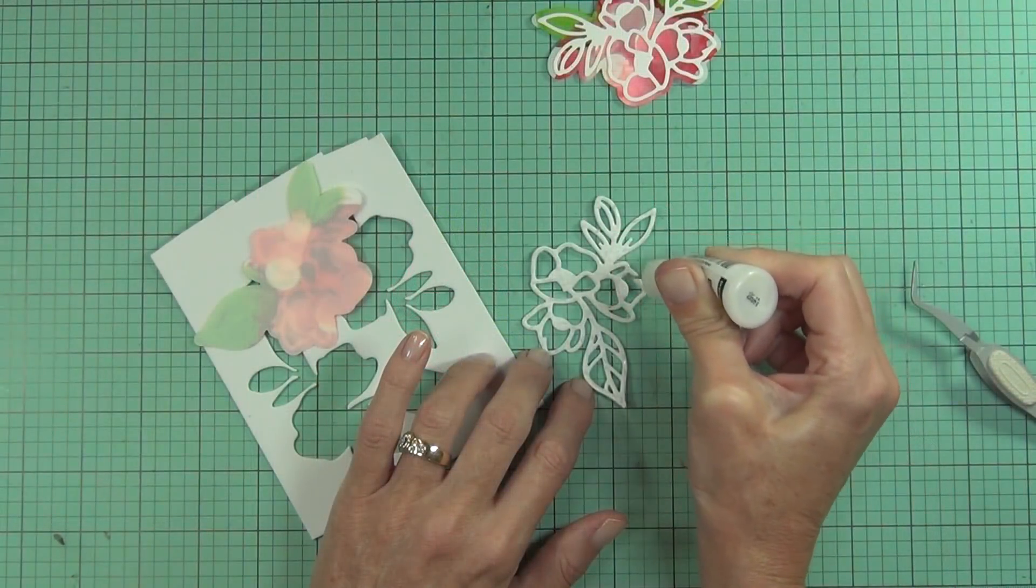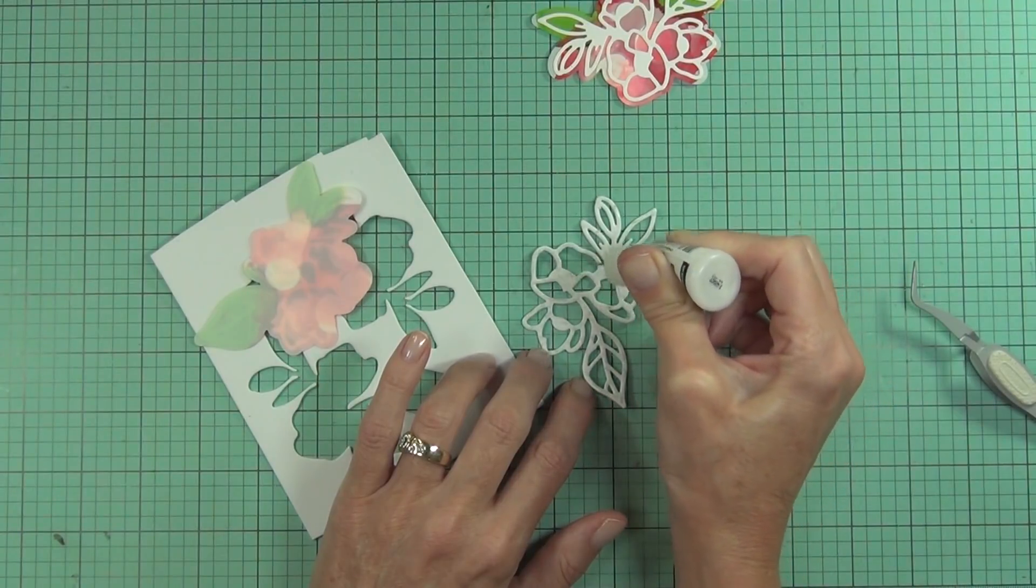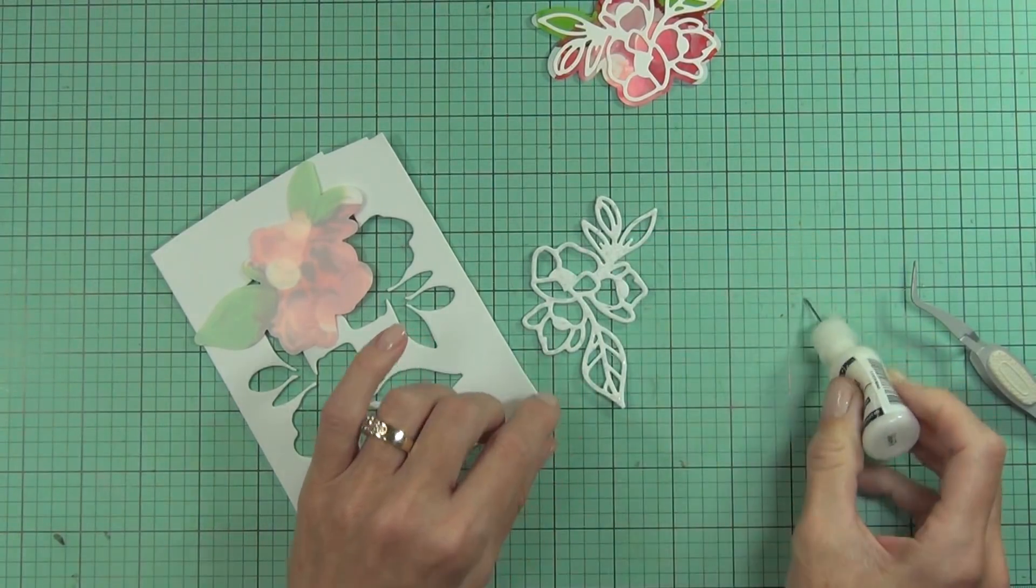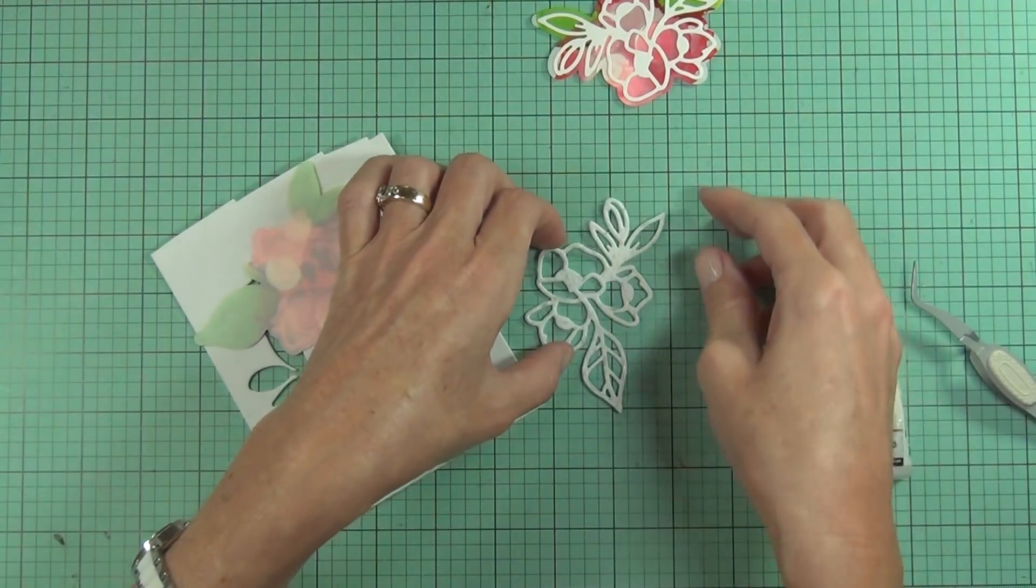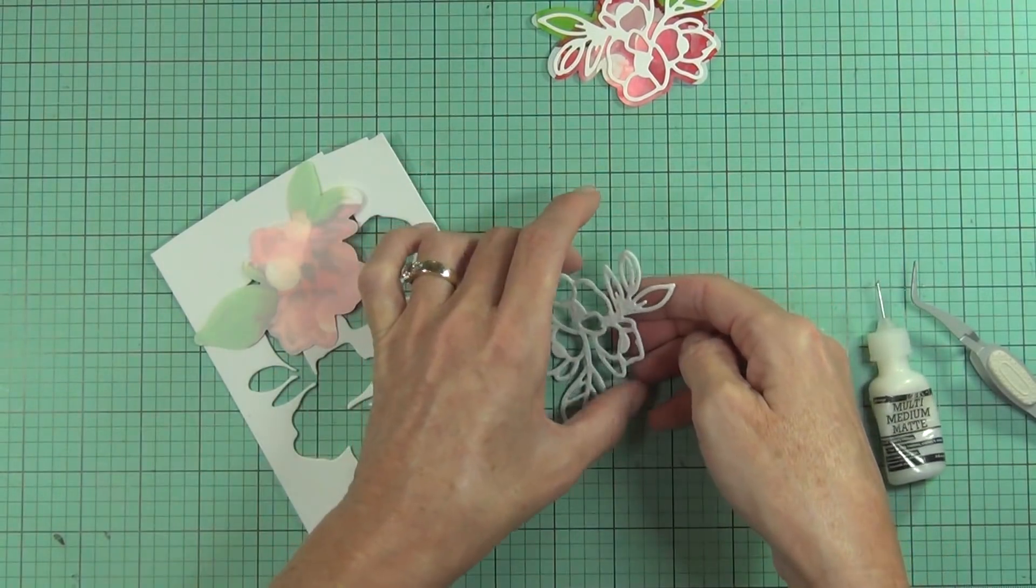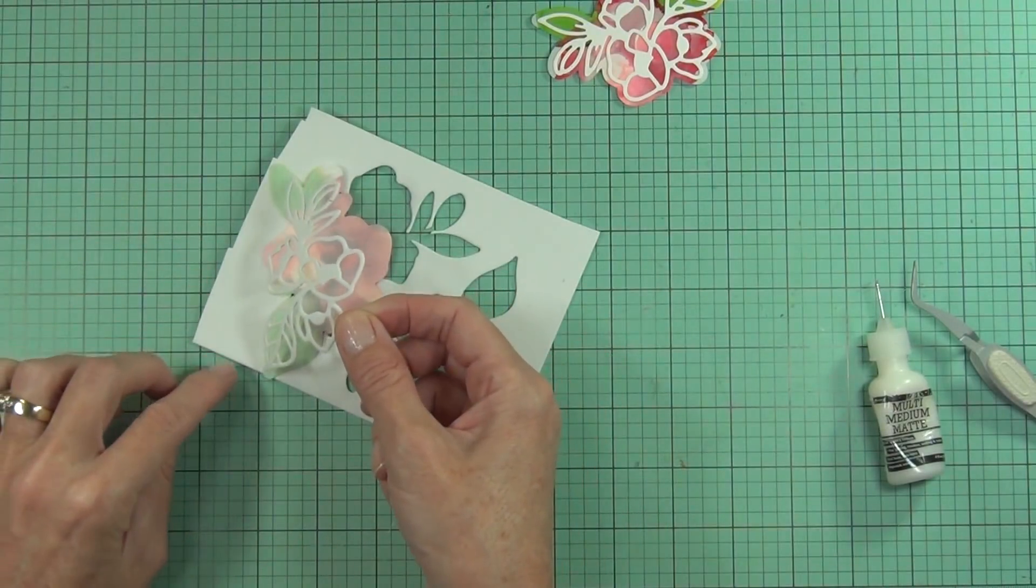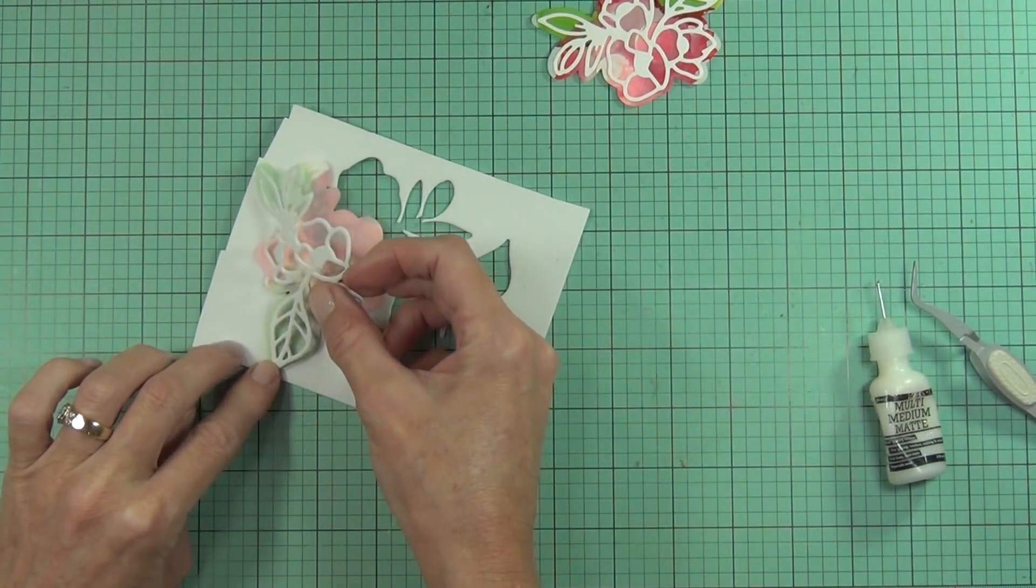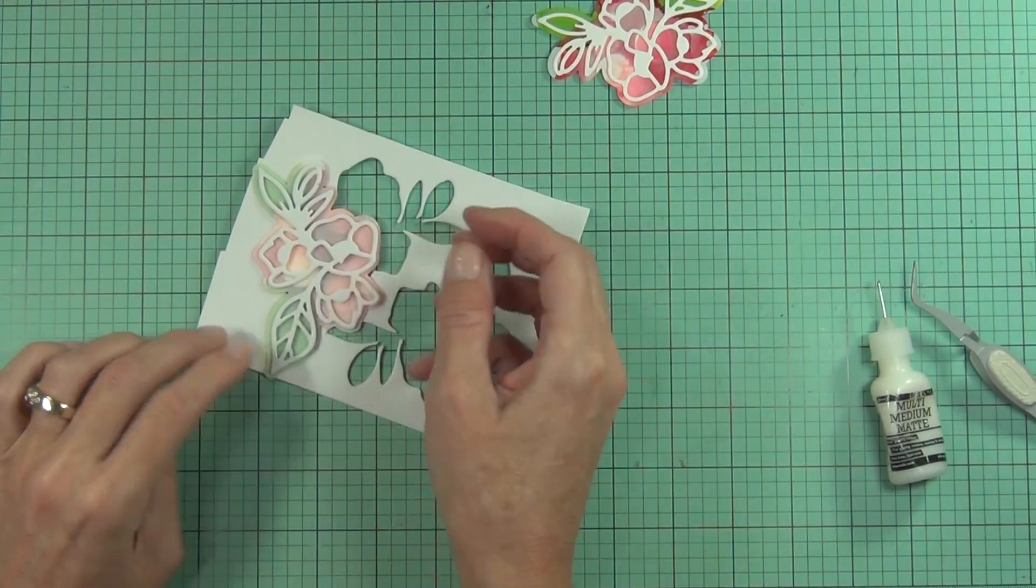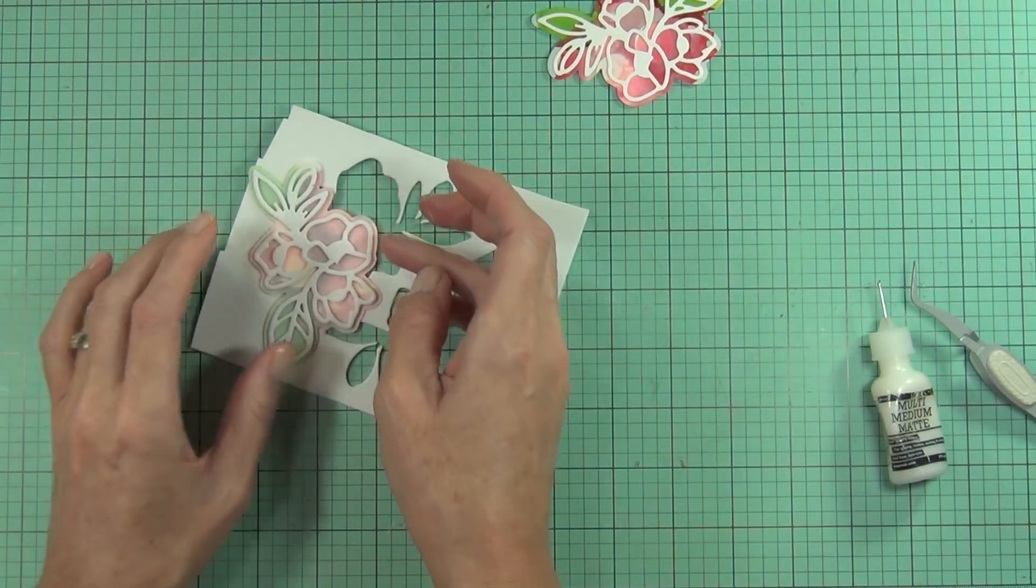This is actually, it's hard to tell here, but this is actually fun foam and I probably didn't even really need to pop out all the centers. Because even though it's a translucent Yupo paper, it's not particularly translucent, although you can sort of see it a little bit.